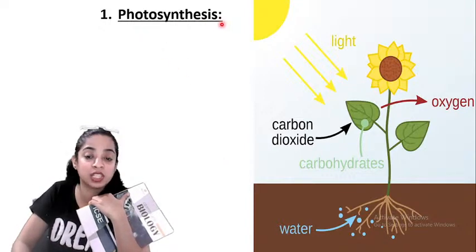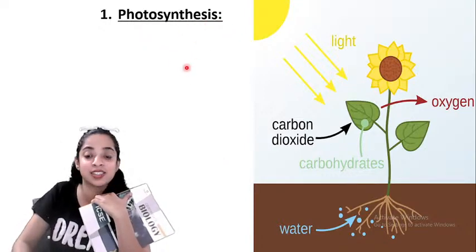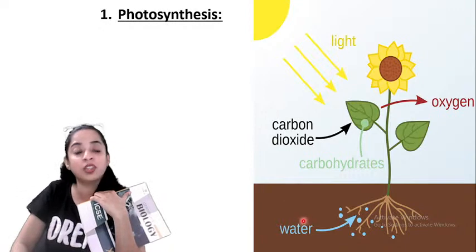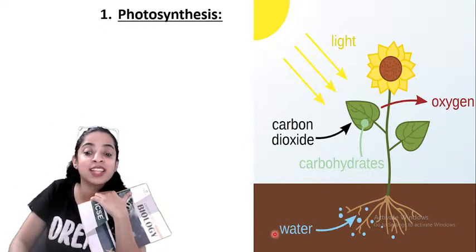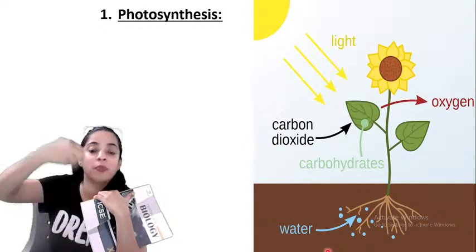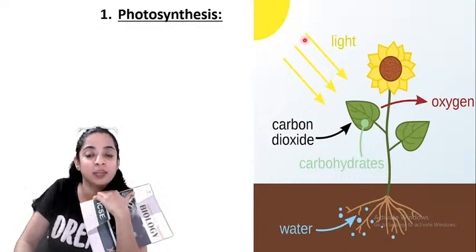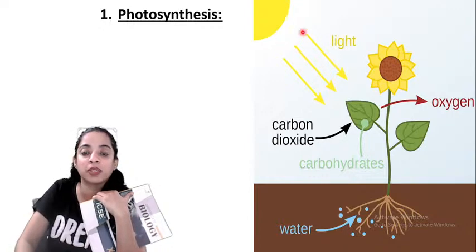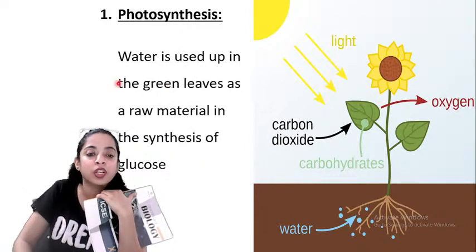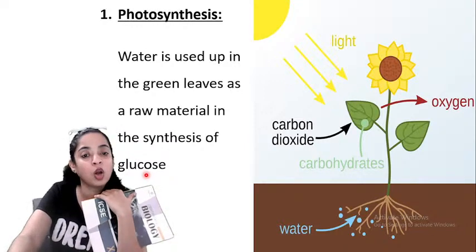The first purpose is photosynthesis. Water is the raw material for photosynthesis. A leaf makes food by absorbing water from the soil with the help of roots. In presence of sunlight, carbon dioxide and water react to form carbohydrate and oxygen — that is photosynthesis. So water is used up in the green leaves as a raw material in the synthesis of glucose.